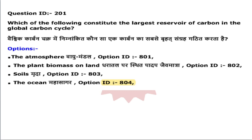Next question: which constitutes the largest reservoir of carbon in the global carbon cycle? The correct answer is ocean. The options given were atmosphere, plant biomass on land, soil, and ocean. The ocean is the largest reservoir because it absorbs more carbon and is called a carbon sink. The smallest reservoir is the atmosphere, where the amount of carbon is very much less.